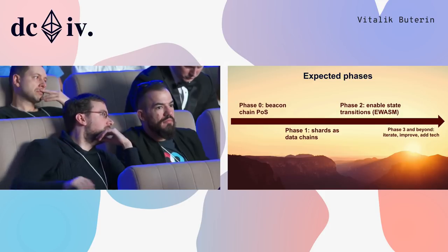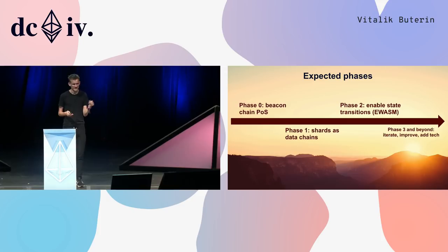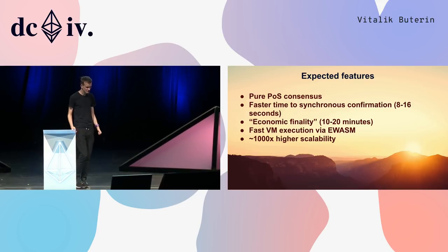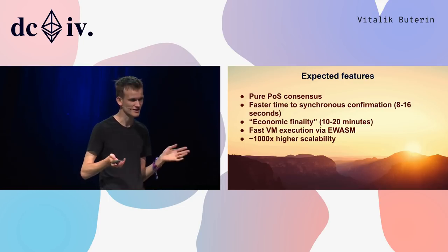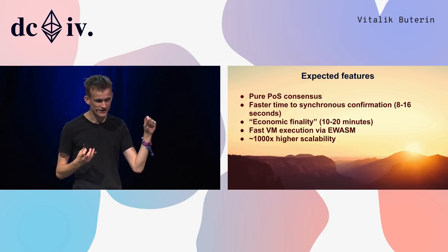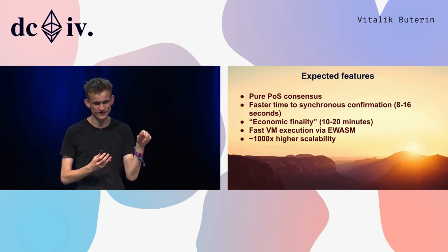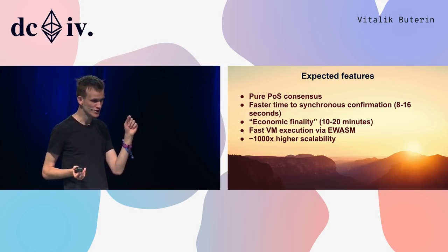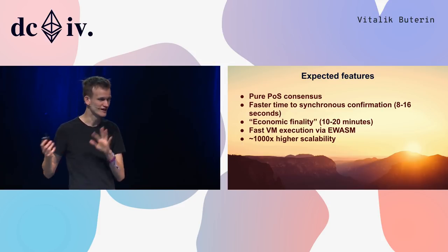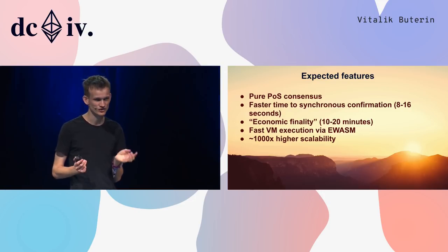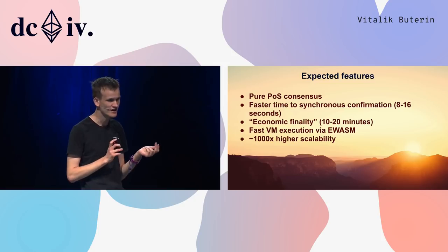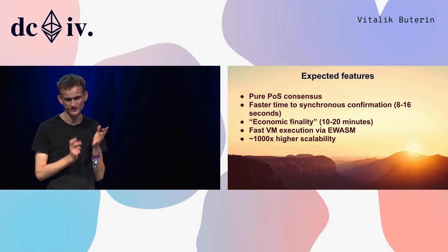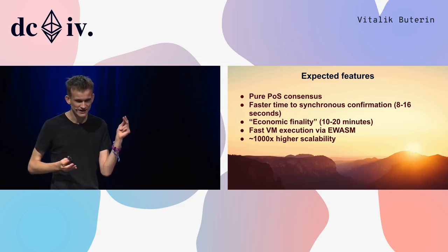Phase two enables state transitions — enabling the virtual machine, accounts, contracts, and ether moving between shards. Phase three and beyond: iterate, improve, add technology. Expected features include pure proof of stake and faster time to synchronous confirmation — about eight to sixteen seconds. One confirmation in the beacon chain involves messages from hundreds of validators, so from a probabilistic point of view it's equivalent to hundreds of confirmations of the Ethereum proof of work chain.